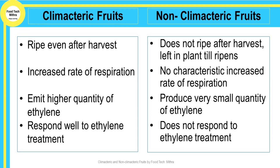The difference between climacteric and non-climacteric fruits: Climacteric fruits ripen even after harvest, whereas non-climacteric fruits do not ripen after harvest — they are left on the plant till they ripen. An increased rate of respiration can be found in climacteric fruits, whereas no characteristic increase in rate of respiration is found in non-climacteric fruits. Climacteric fruits emit a higher quantity of ethylene, whereas non-climacteric fruits produce a very small quantity of ethylene. Climacteric fruits respond very well to ethylene treatment, whereas non-climacteric fruits do not respond to ethylene treatment.